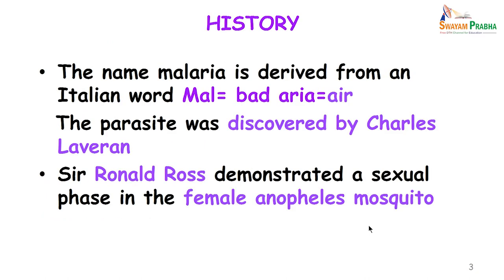The word malaria is derived from the Italian word 'mal' meaning bad and 'aria' meaning air. The parasite was discovered by Charles Laveran, and Sir Ronald Ross demonstrated the sexual phase of the malarial parasite in the female Anopheles mosquito.